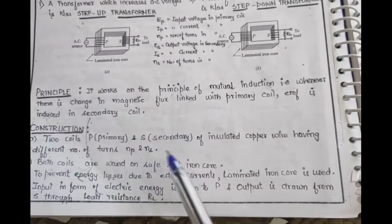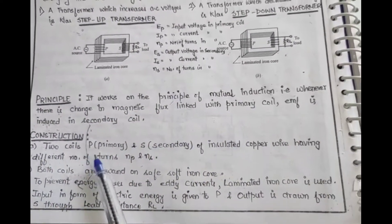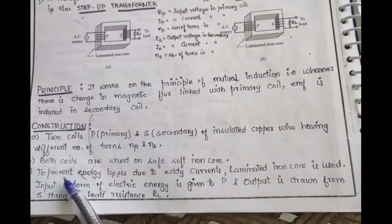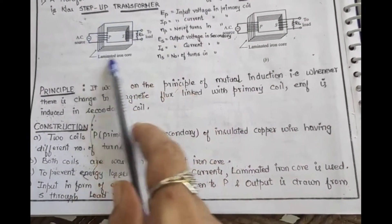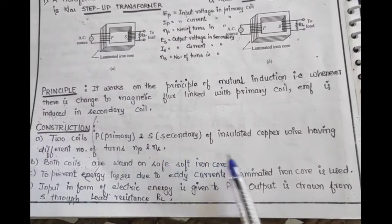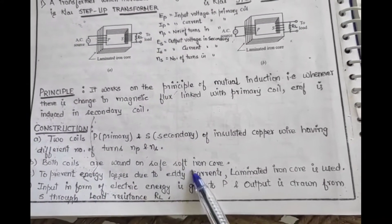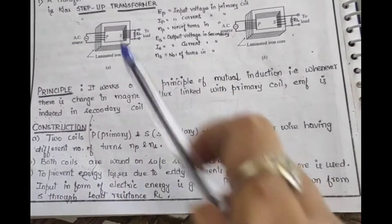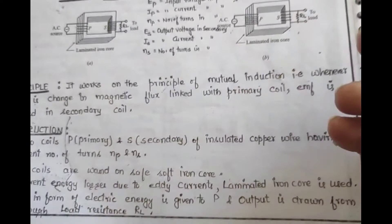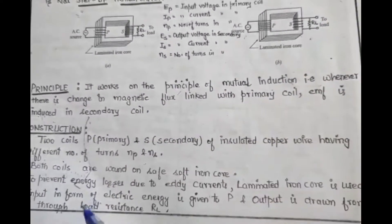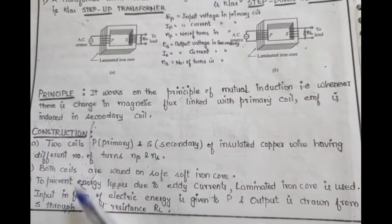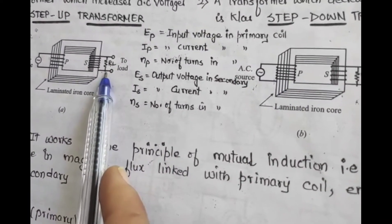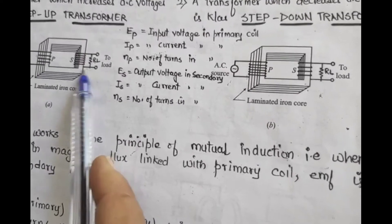So let's read construction. Primary and secondary, both are made of insulated copper wire having different number of turns which we have discussed. Both coils are wound on soft iron core so that the magnetic flux concept, the induced flux should be strong. To avoid energy losses, the core is used in the form of laminated iron core. And input electrical energy AC is given, and the output we take across load resistance RL.